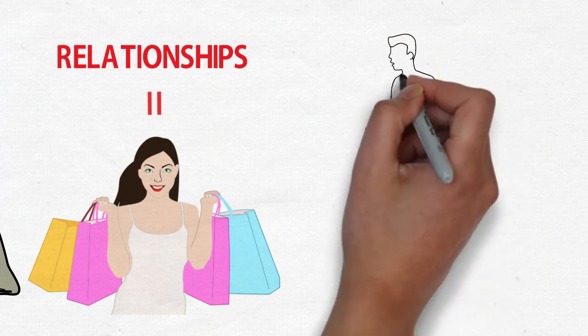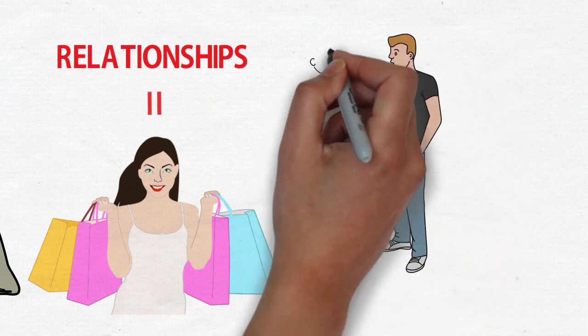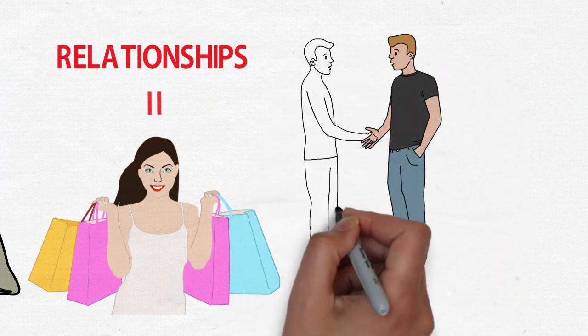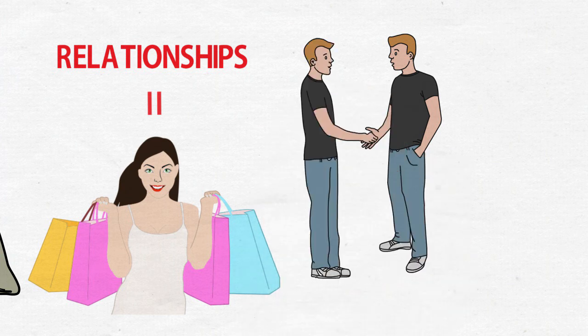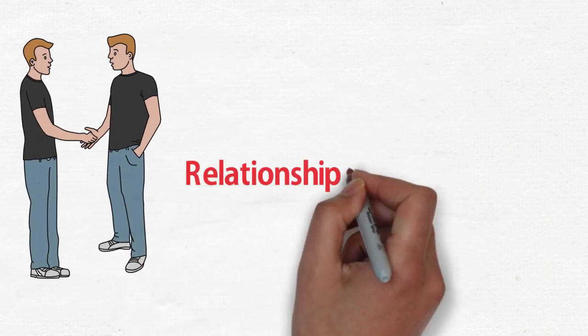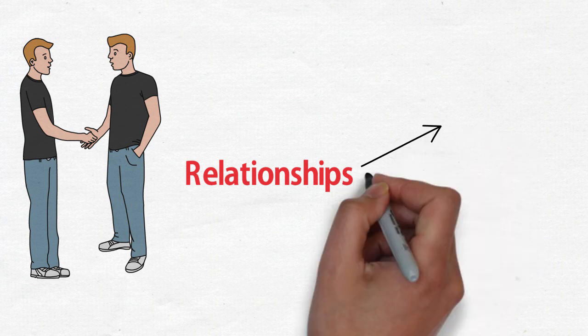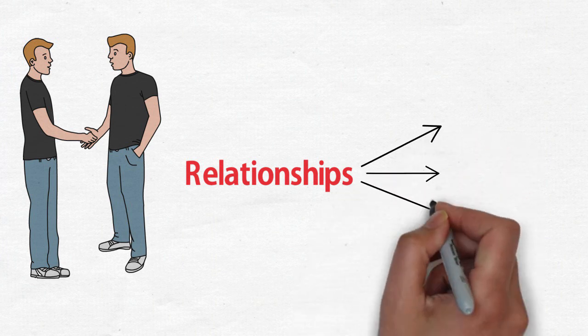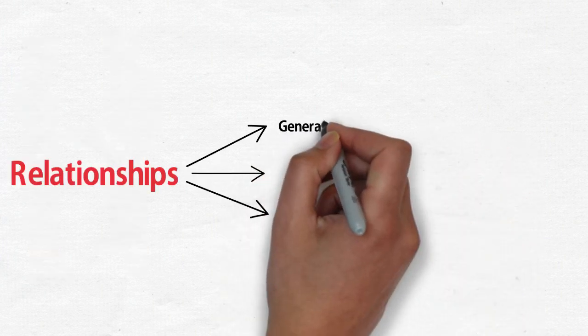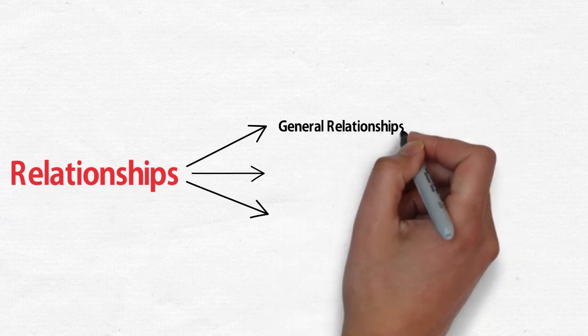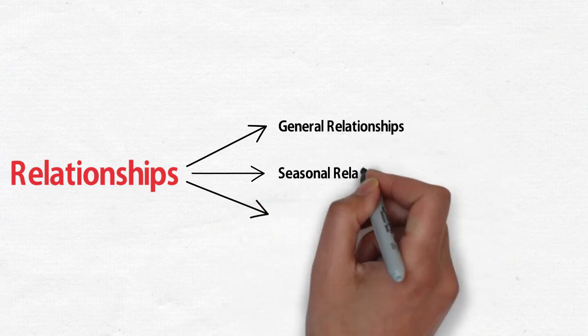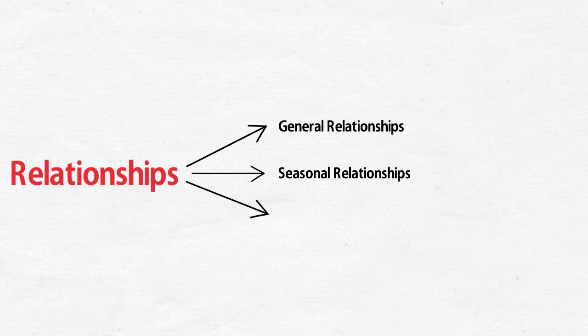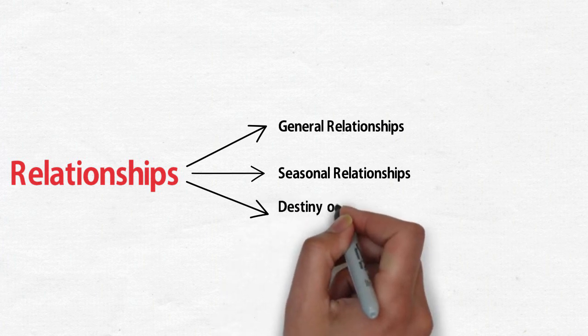Relationships do not maintain themselves. The parties involved must commit to maintaining them. There are three basic kinds of relationships: number one, general relationships; number two, seasonal relationships; and number three, destiny or covenant relationships. The degree of investments that you put in them will not be the same.